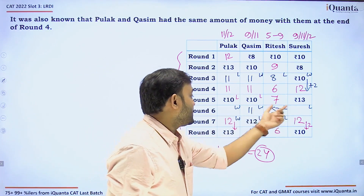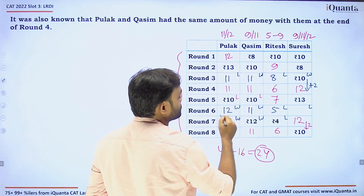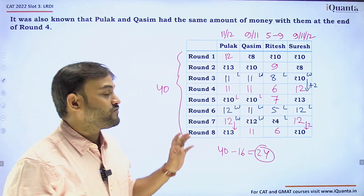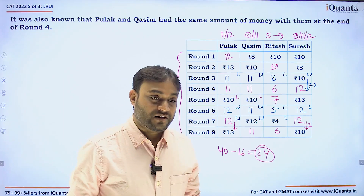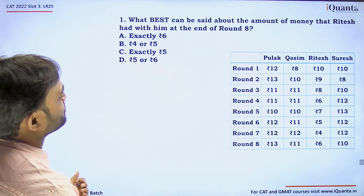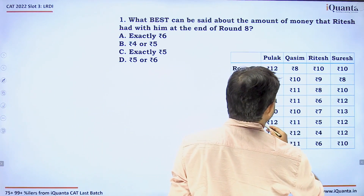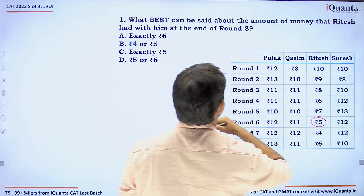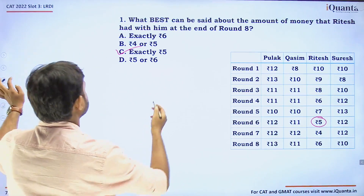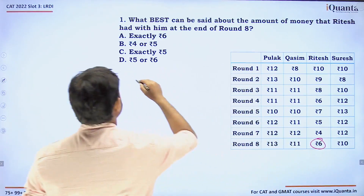With the table now complete, we can answer the questions. Question: What best can be said about the amount of money Ritesh had at the end of Round 8? At the end of Round 8, Ritesh had exactly 6 rupees — that is option E.